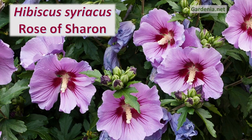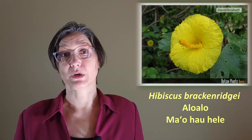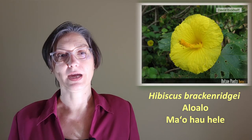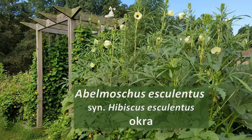Rose of Sharon is frost tolerant and is widely cultivated as an ornamental in temperate areas. Besides being beautiful, hibiscus flowers have an interesting adaptation: the filaments of the stamens are fused together to the styles, making it easier for pollinators as the stamens and stigma are in close proximity. Hibiscus brackenridgei is the state flower of Hawaii, and on mainland North America you can find several native hibiscus, such as rose mallow, Hibiscus lasiocarpos. Okra, formerly Hibiscus esculentus, is now Abelmoschus esculentus.